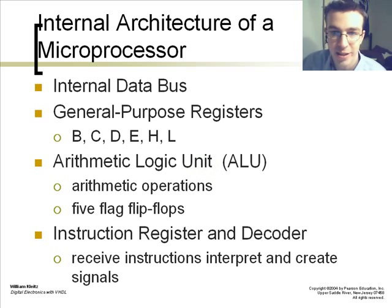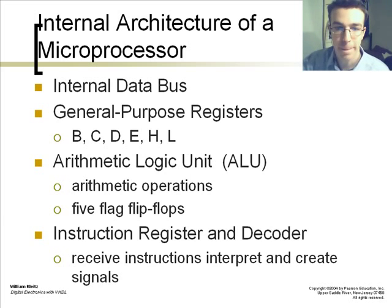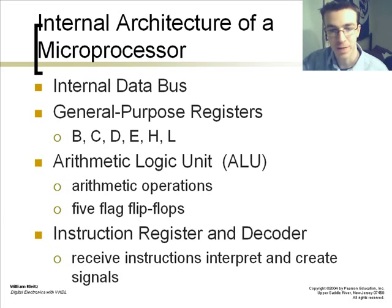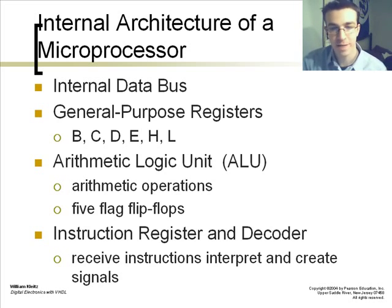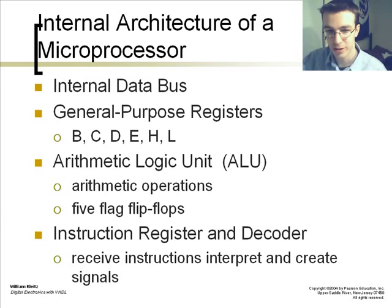The internal architecture of a microprocessor: the internal data bus creates all the data lines and address lines. It has general-purpose registers and the ALU, arithmetic logic unit, which performs arithmetic functions. It has five flag flip-flops that record whether you have a negative value, a zero value, an overflow, or any of those flagging conditions. The instruction register and decoder both receive instructions, interpret them, and create signals for the instructions that the control system puts out.